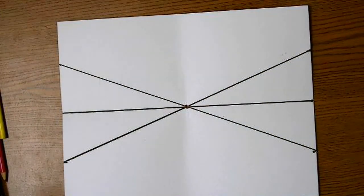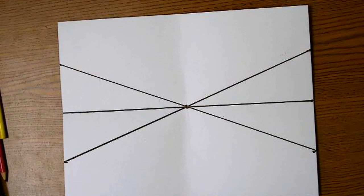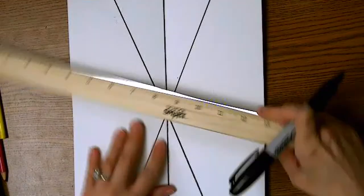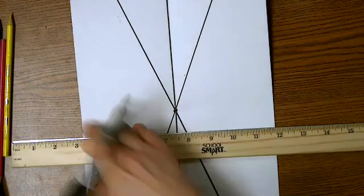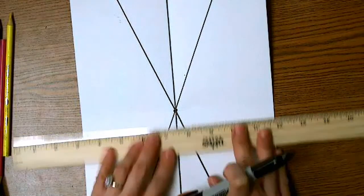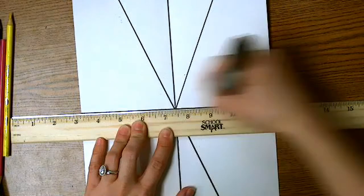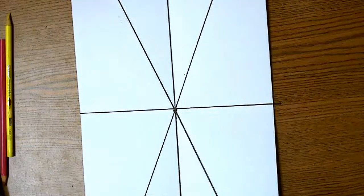So far, your paper should look like this when it's facing horizontally. Now I'm going to turn it vertically and I'm going to put a line where that crease was, right down the middle of my page.